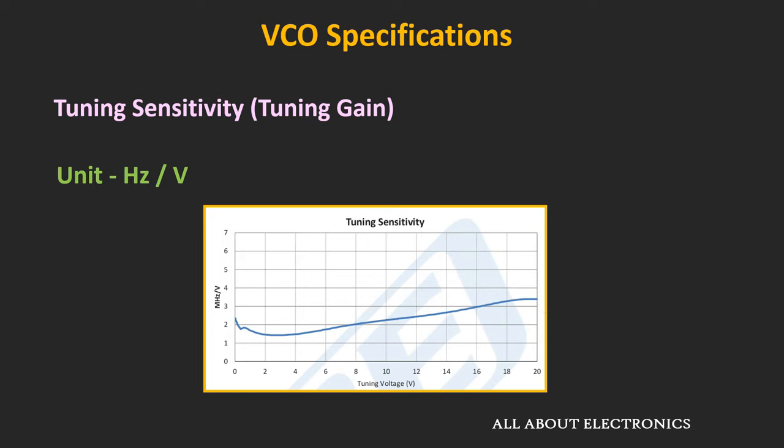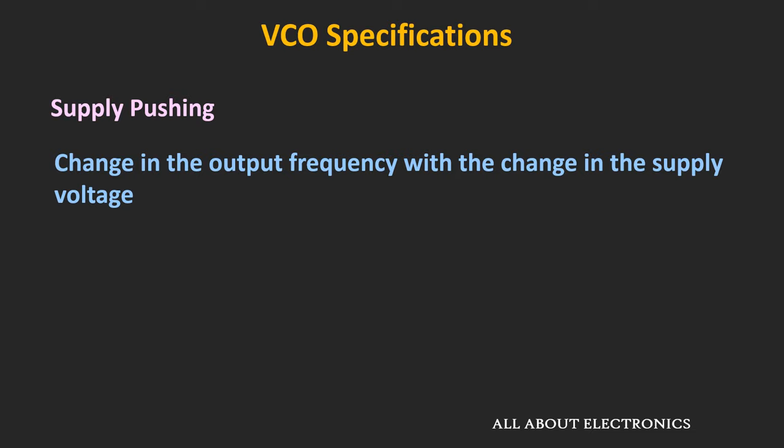The next specifications are supply pushing and load pulling, which are important for high-frequency VCOs. Supply pushing defines the change in output frequency with a change in supply voltage. Ideally, for any VCO, even if there is a change in supply voltage there should be no change in the output frequency, but actually the output frequency does change with supply voltage. This change in frequency due to supply voltage is known as supply pushing, and it is defined in units of Hz per volt. The effect of supply pushing can be minimized by using regulated power supplies, and further minimized by using oscillator circuits with a high Q factor.